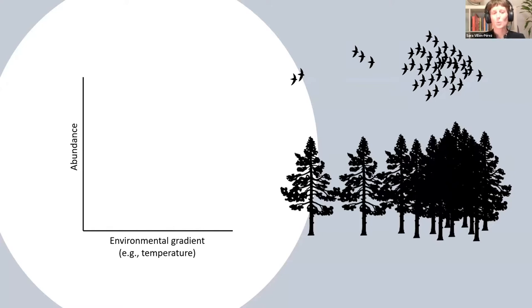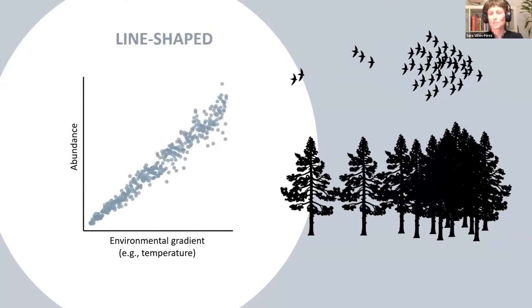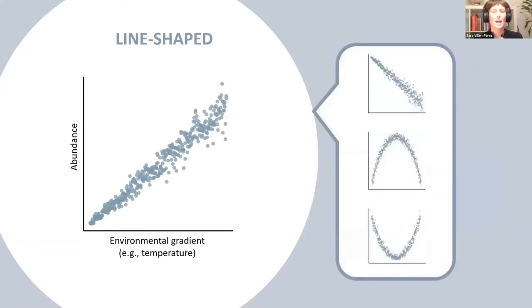I guess you will imagine something like a line-shaped pattern. When I say a line-shaped pattern, I'm referring to any type of pattern where sample points are distributed around a line with a certain error.